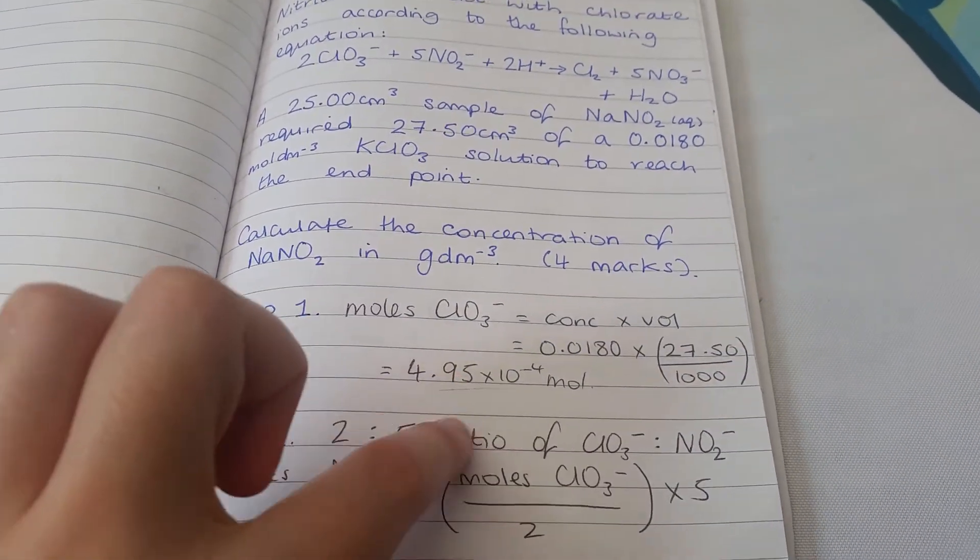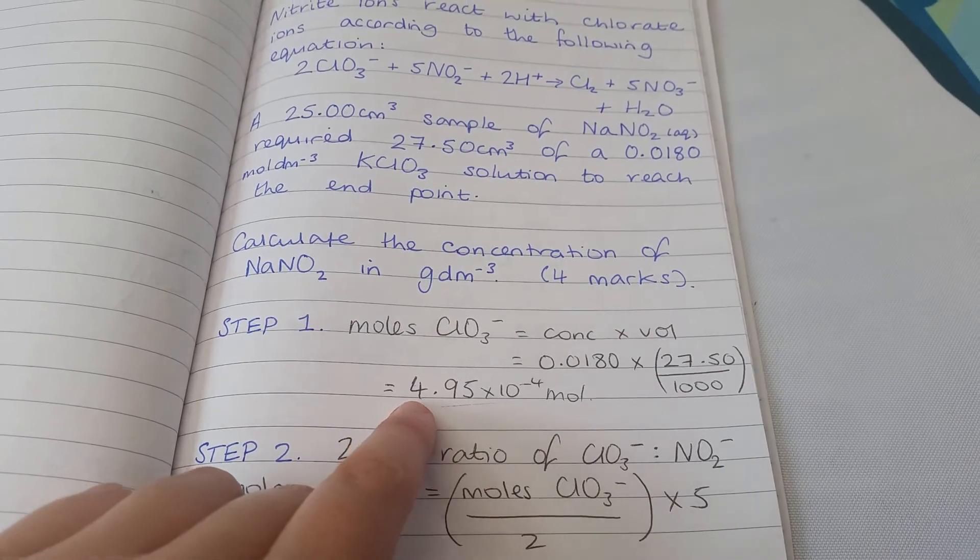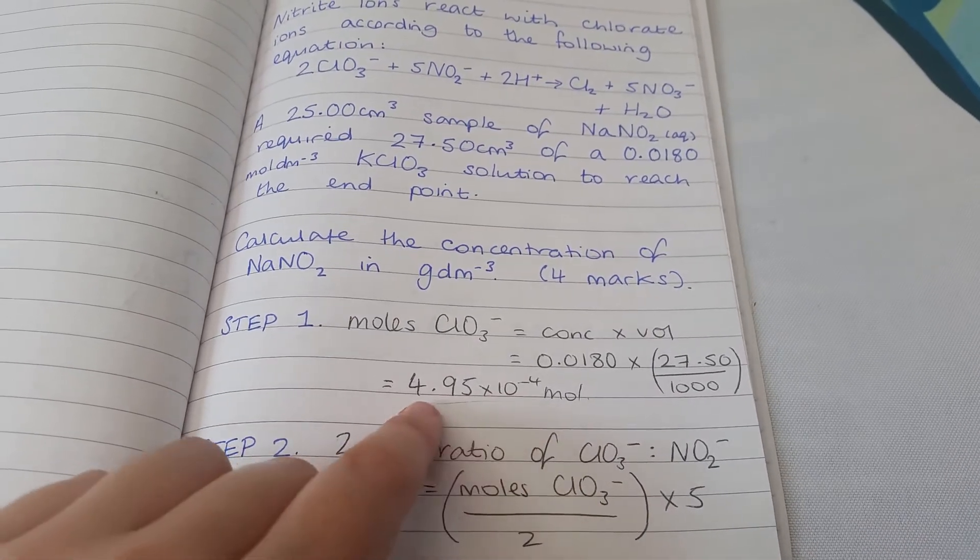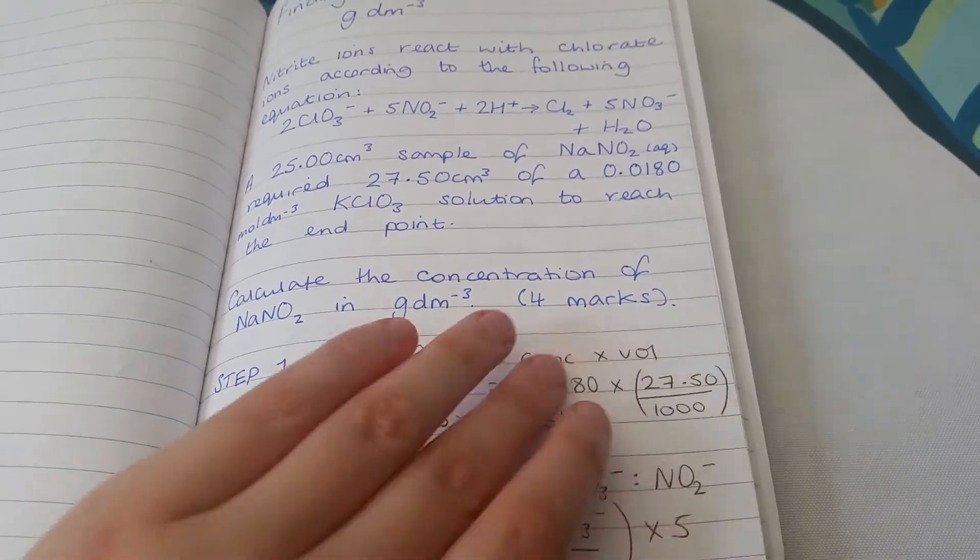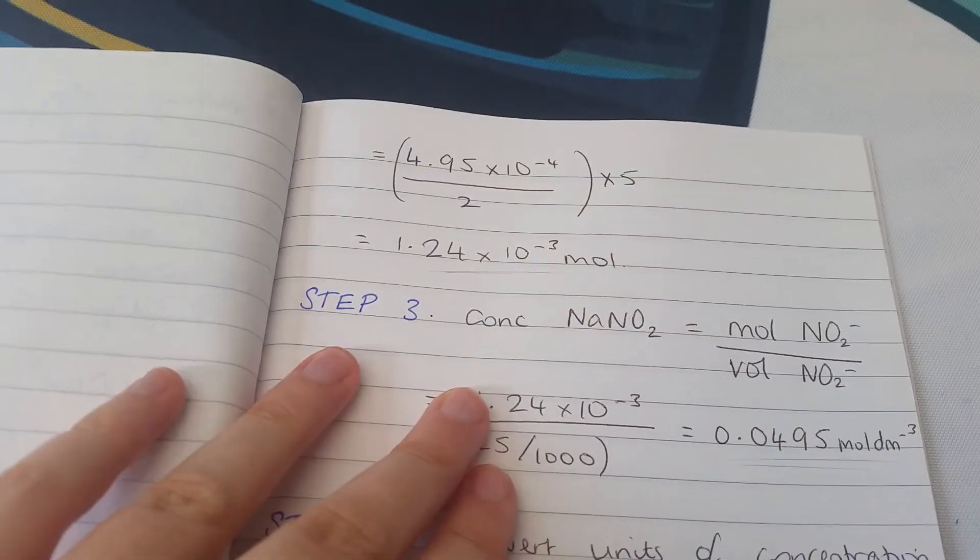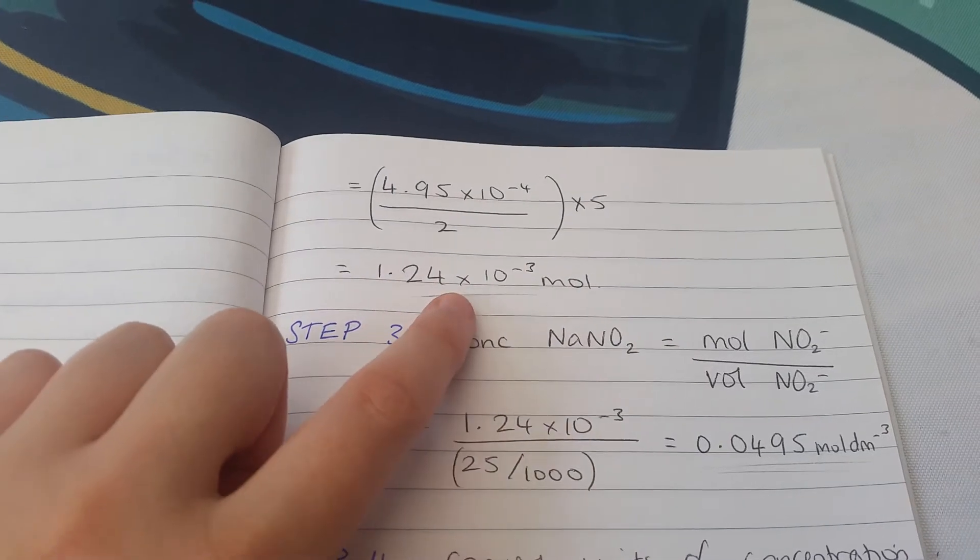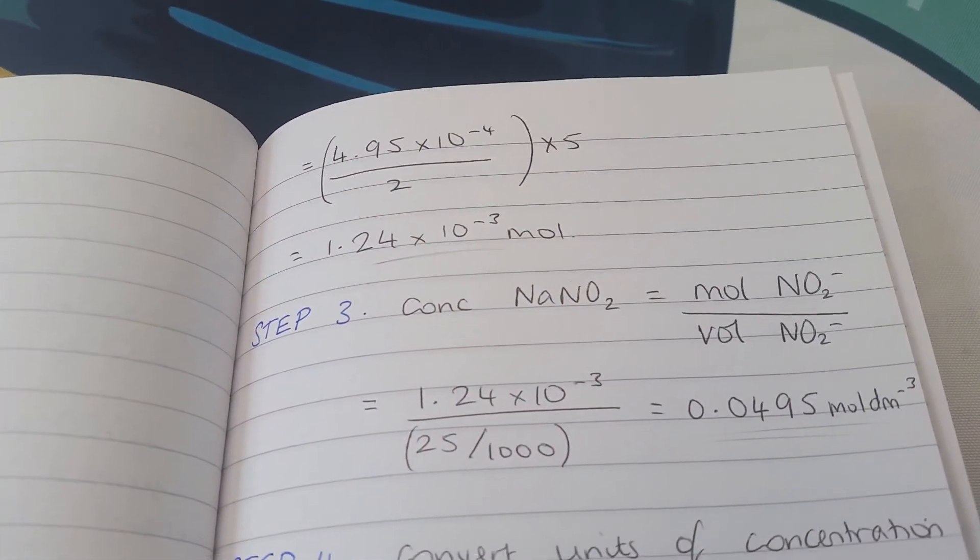Plugging in our numbers, we divide this number of moles by 2 and then multiply by 5, which gives us the moles of the nitrite: 1.24 × 10⁻³ mol.